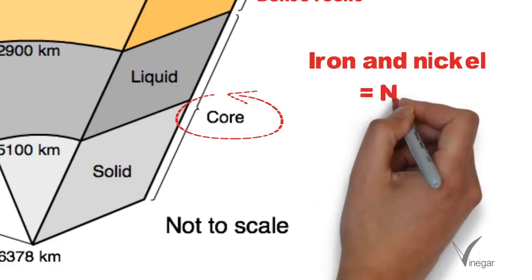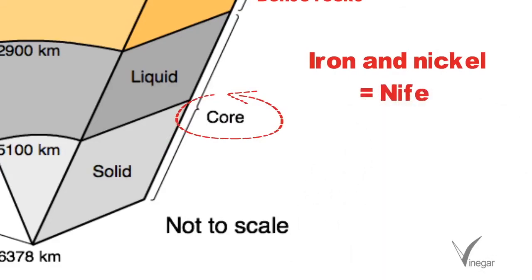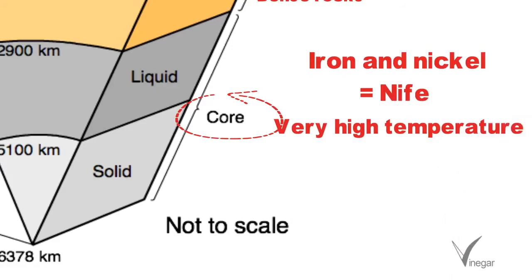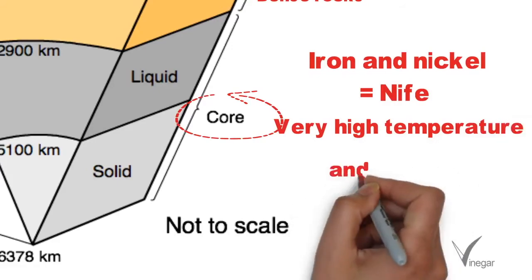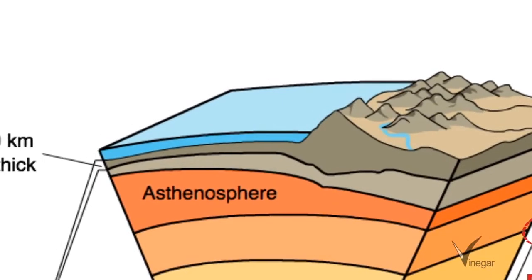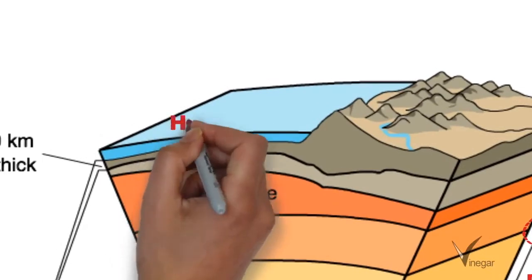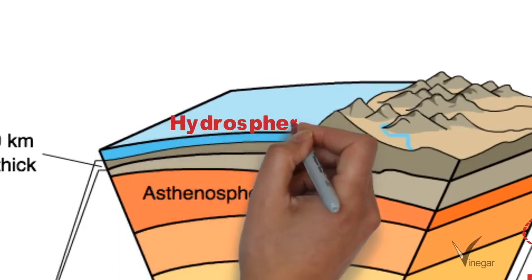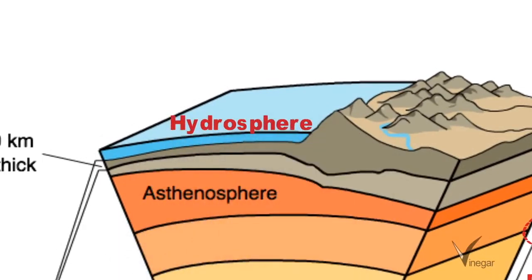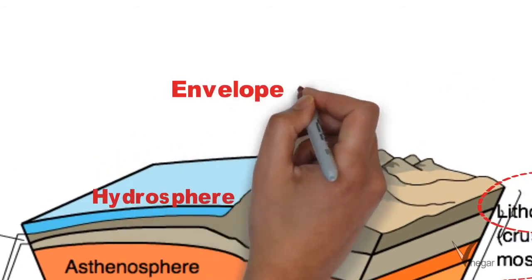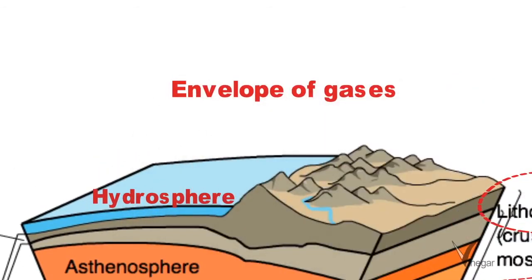The core is also known as NIFE. The temperature at the core can be very high — around 3,500 degrees Celsius — and the pressure is also very high. The portion of Earth's crust which is covered with oceans is known as the hydrosphere.